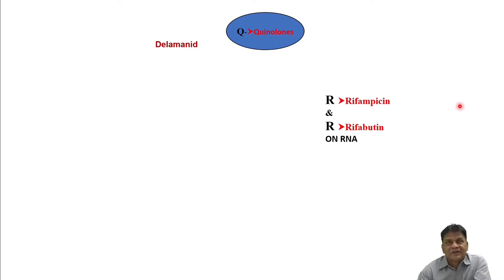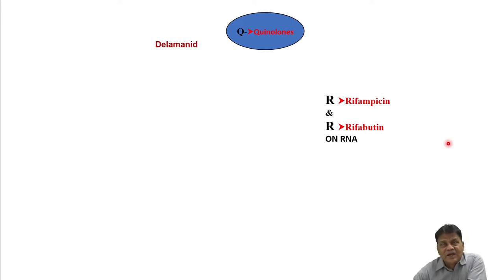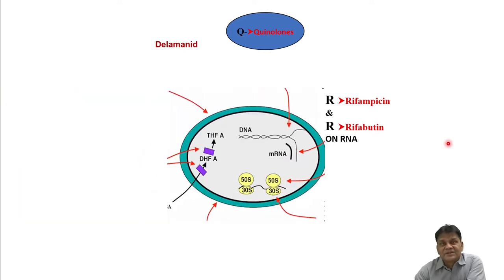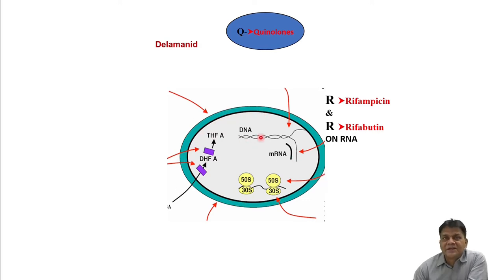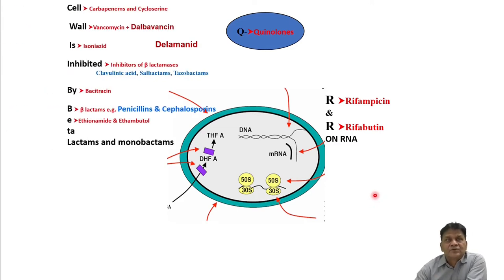Bacteria have developed different mechanisms by which they can counter all these antibiotics. I'm showing a slide I use for medical undergraduates and postgraduates to help them understand the mechanism of action of different antibiotics. This is the bacterial cell wall — the cytoplasm, the cytoplasmic membrane (black), the cell wall (green), the DNA synthetic machinery, messenger RNA, and the protein synthetic machinery. On the basis of site of action, I have classified the antibiotics.